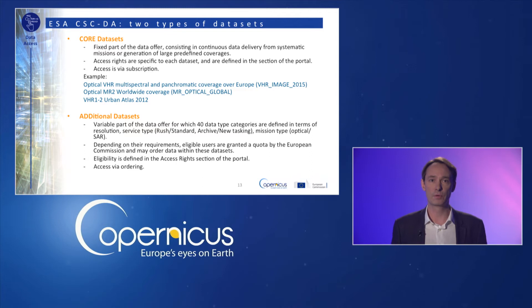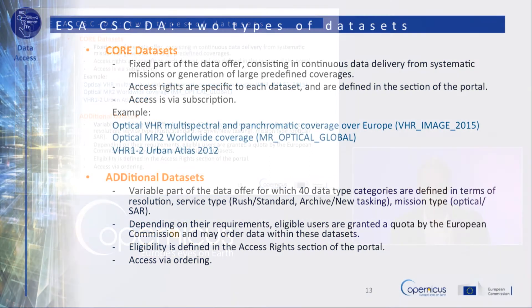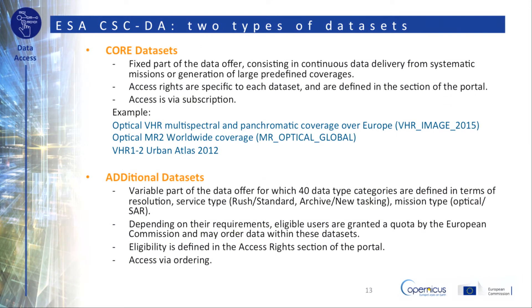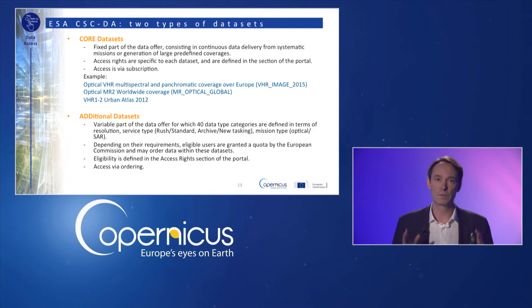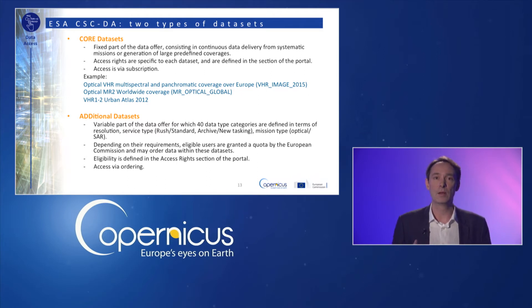Concerning the datasets available through CSCDA, they are twofold. The core datasets are a fixed part of the data offer, consisting of continuous data delivery from systematic missions or generation of large predefined coverage. The access rights are specific to each dataset and are defined in the section of the portal. Then you find the additional datasets — a variable part of the data offer with 40 data type categories defined in terms of resolution, service type such as rush, standard, archive, or new tasking. Eligible users are granted a quota by the European Commission and may order data within these datasets. Eligibility is defined in the access rights section of the portal.